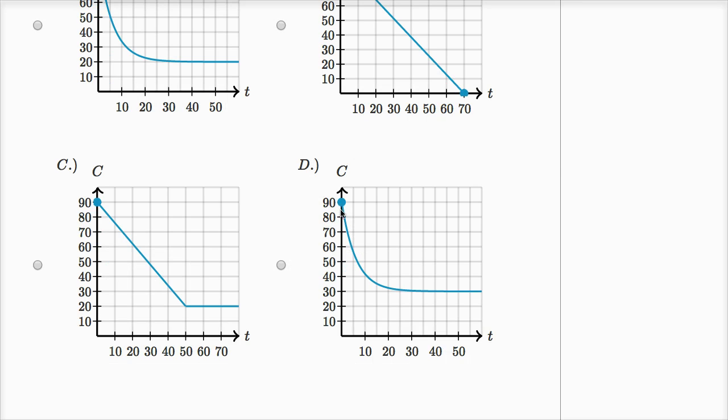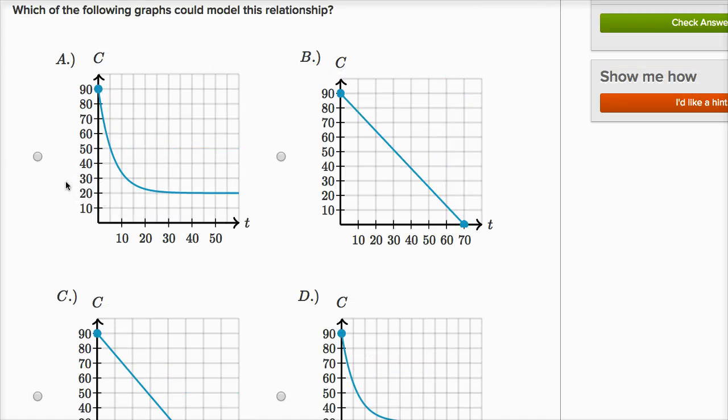D, we are starting at 90. It does look like an exponential function. We have exponential decay right over here. And we are approaching something, but it's not the room temperature of 20 degrees Celsius. We're approaching 30 degrees Celsius here. So I'd also rule out D. So A is looking good.